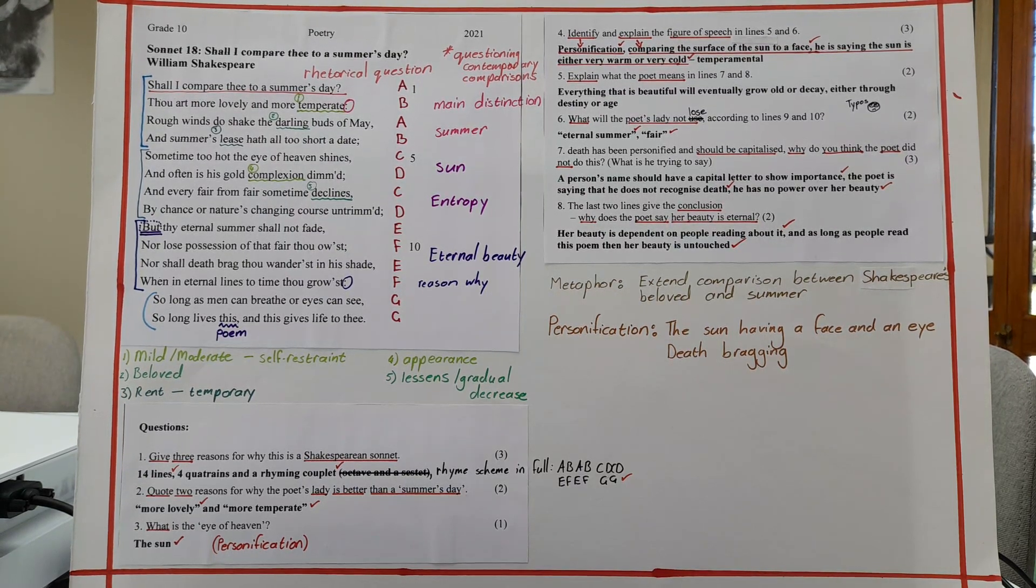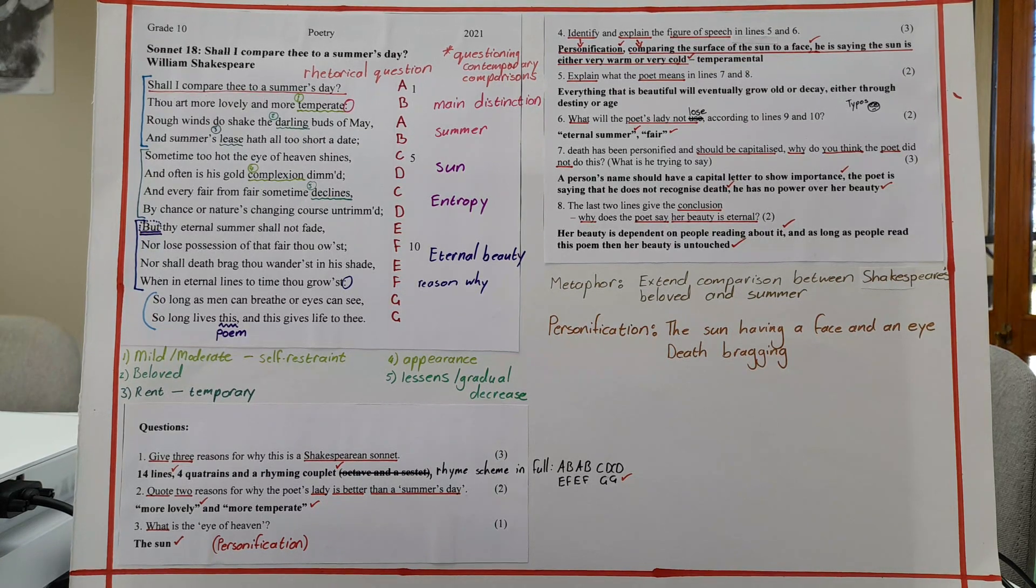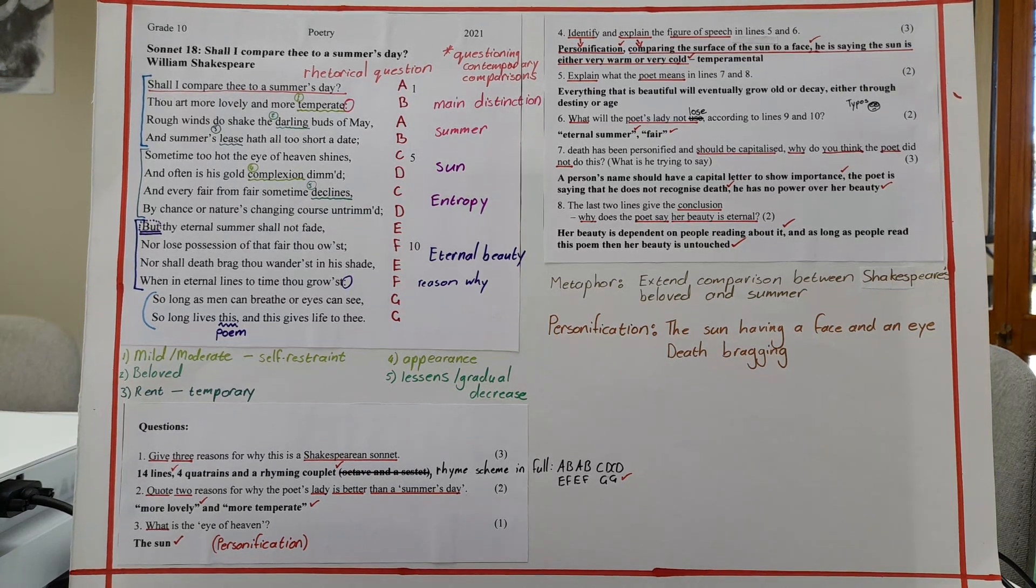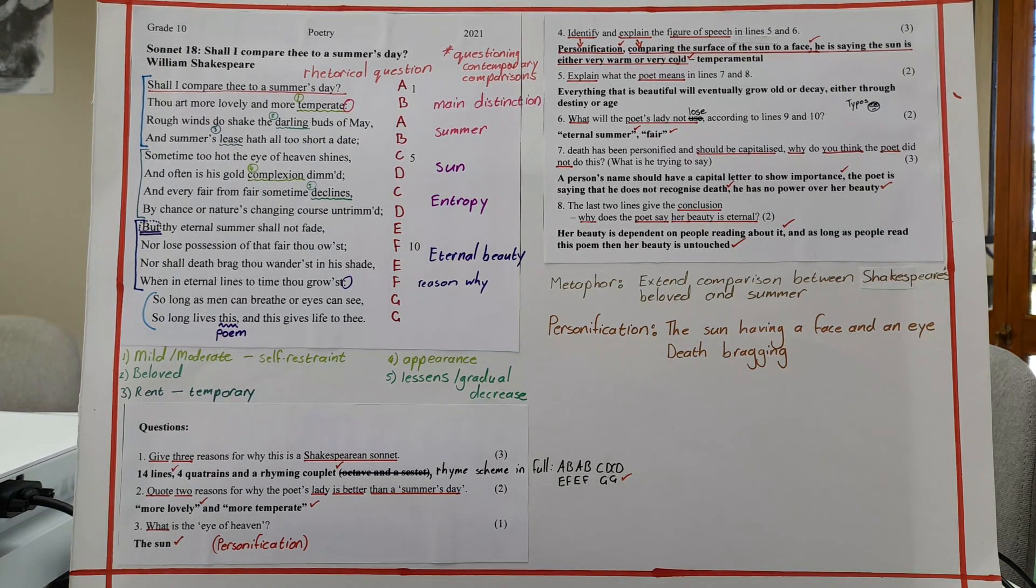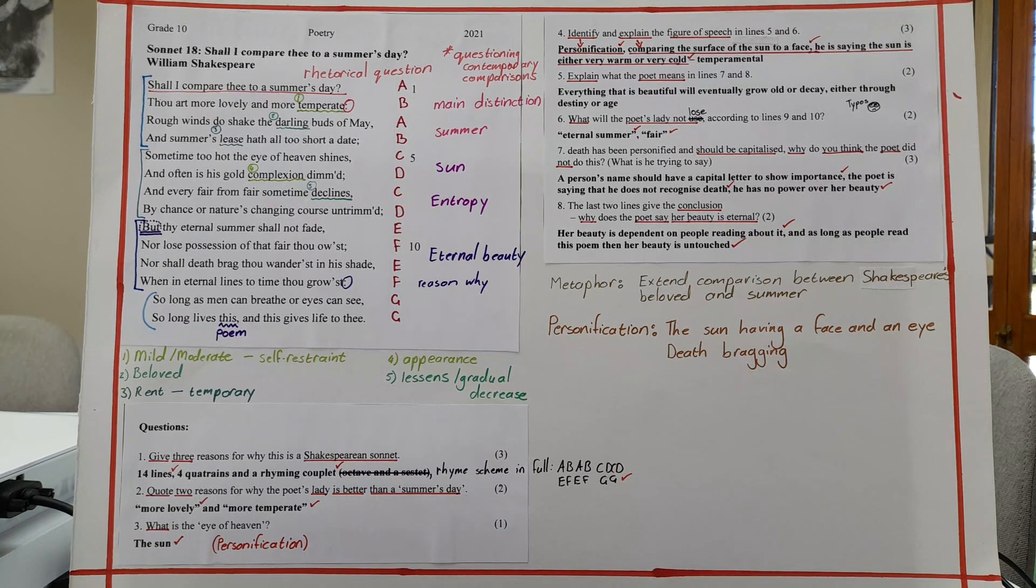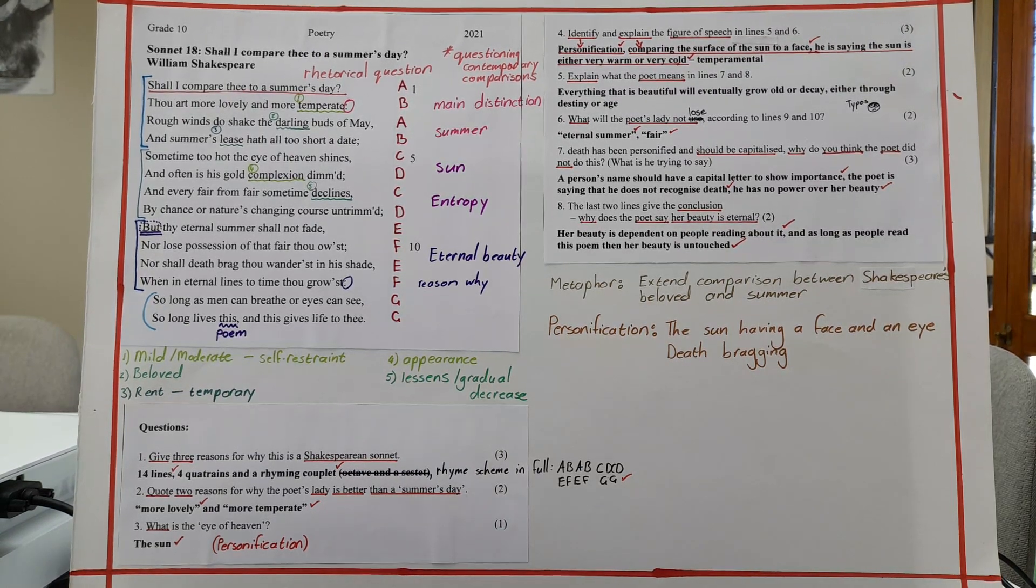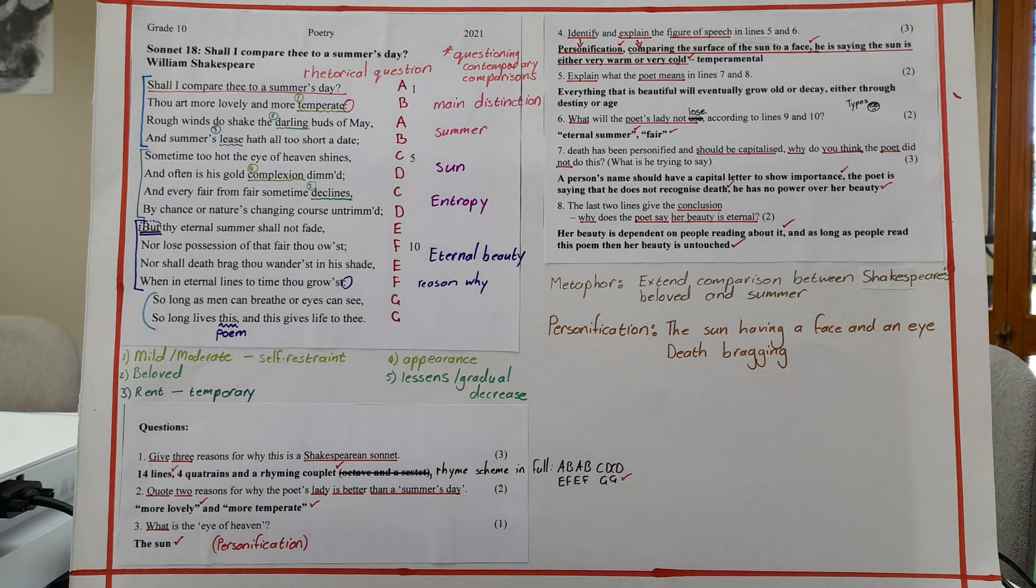Number five, explain what the poet means in lines seven and eight. So yeah, you have to paraphrase. It is for two marks and it is two lines. So what is the basics of line seven? What is the basics of line eight? That everything is beautiful and eventually will grow old or decay either through destiny or age. So there are the two things. So every fear from fear sometime declines. Everything eventually gets old or decays. Everything fades. Why? Either by chance. So chance, fate, destiny, anything along that line. Or age. Changes, nature, okay. So as the seasons run, as the years progress, that is ageing.